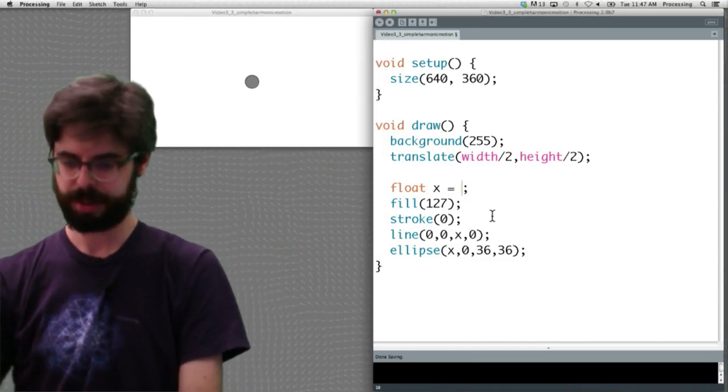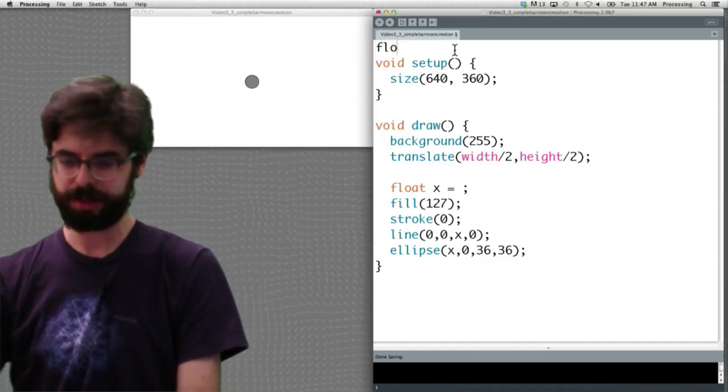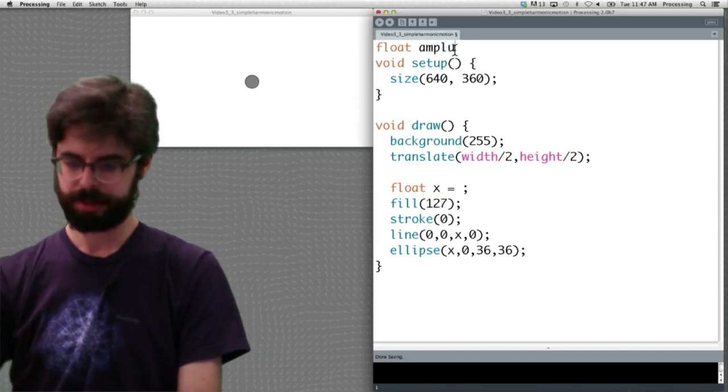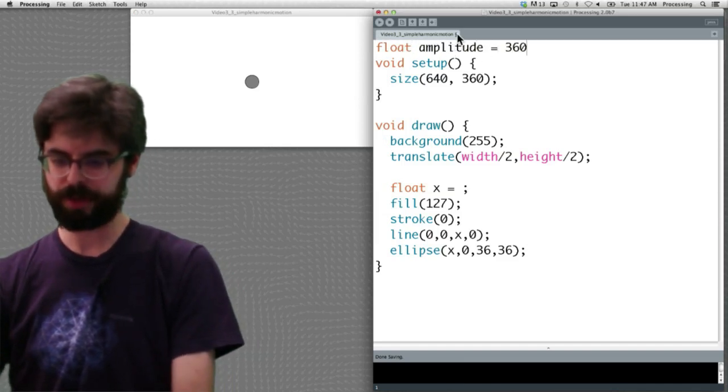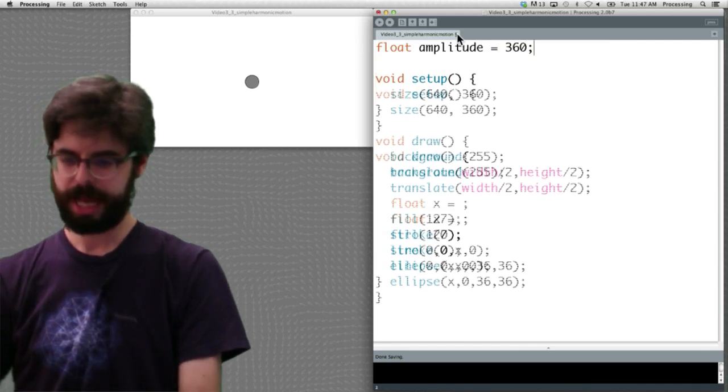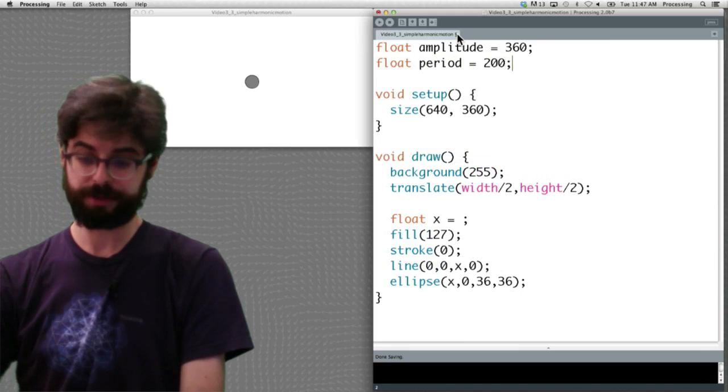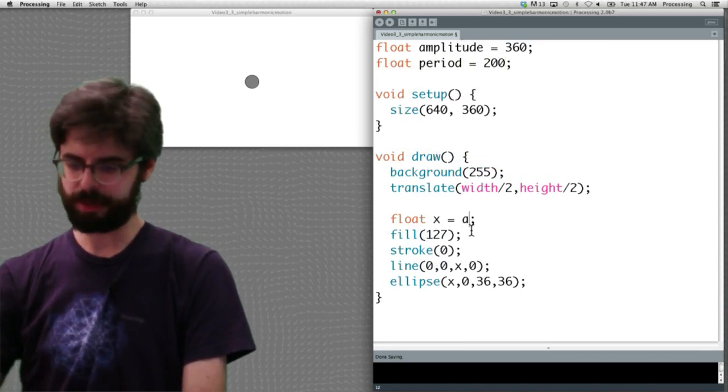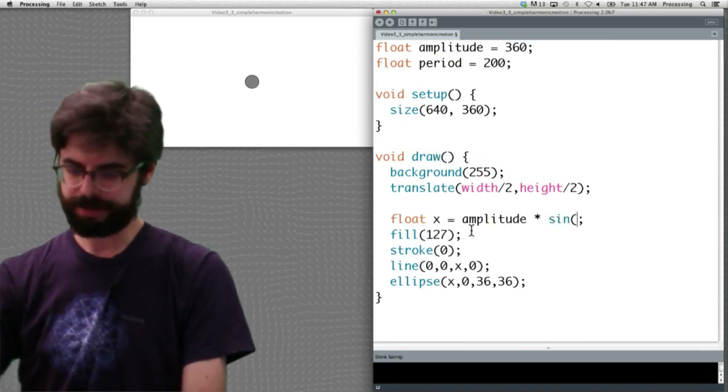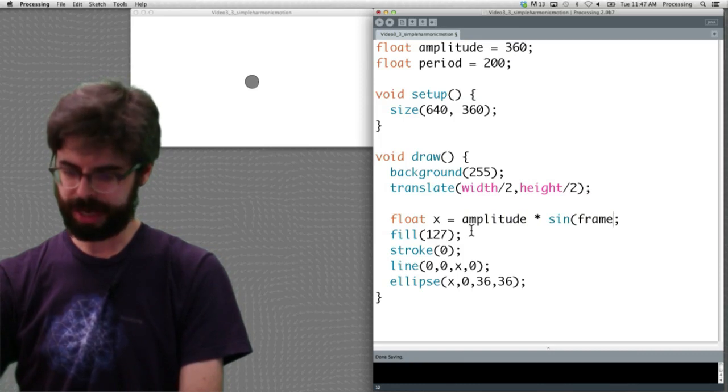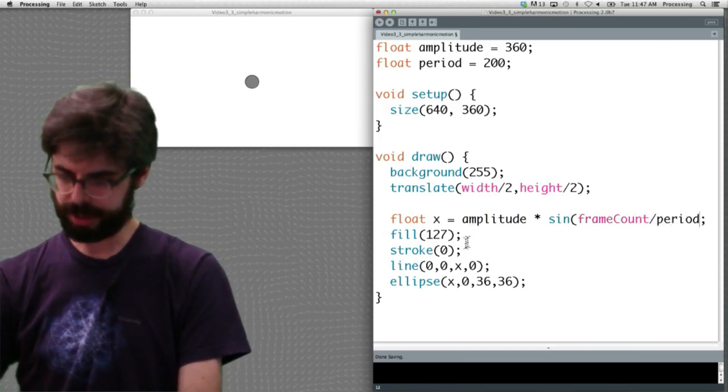So we can say x equals, so let's give ourselves an amplitude of 360 and a period of, we said 200 frames. So x is equal to that amplitude times sine of frame count divided by period and I'm going to run out of space.